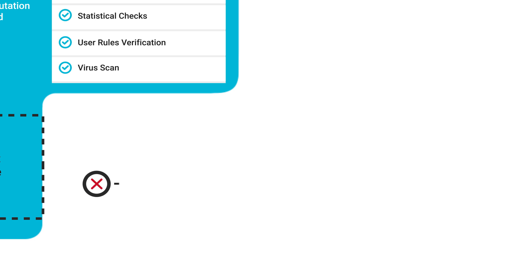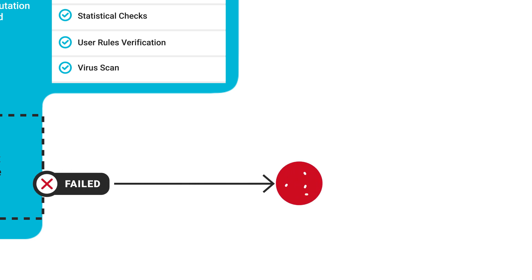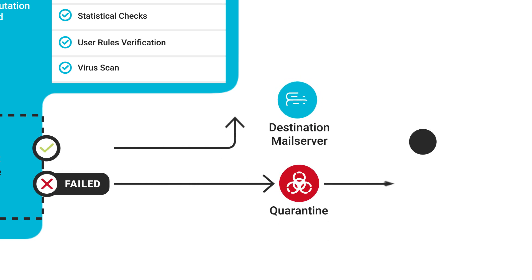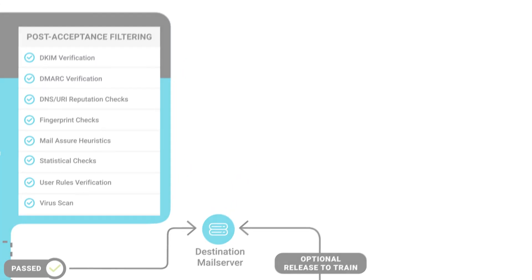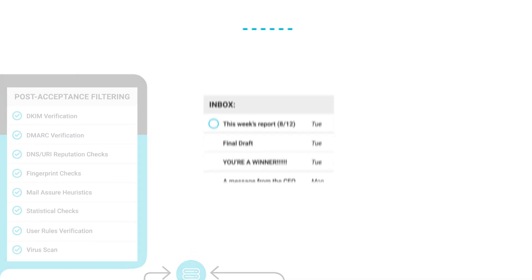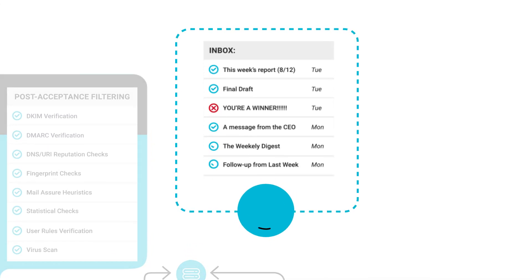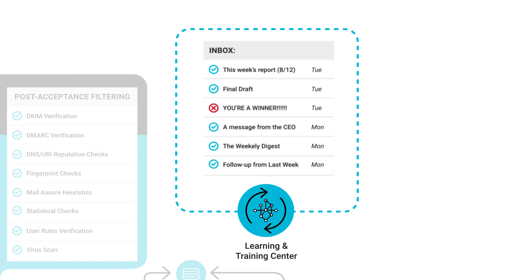Next, Mail Assure decides whether to quarantine the email or release it to you. You can mark any messages safe or unsafe from your Mail Assure dashboard. Doing this updates our engine so other users can benefit from the collective intelligence we share with our worldwide user base.